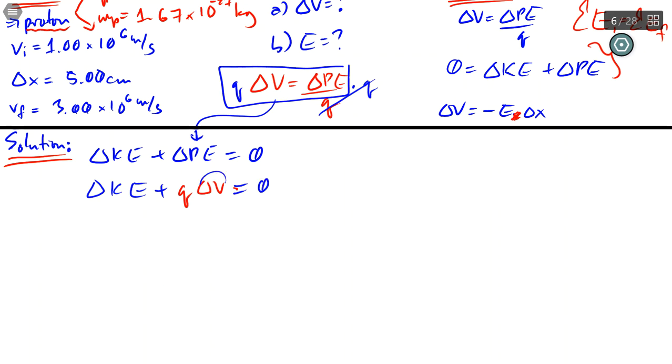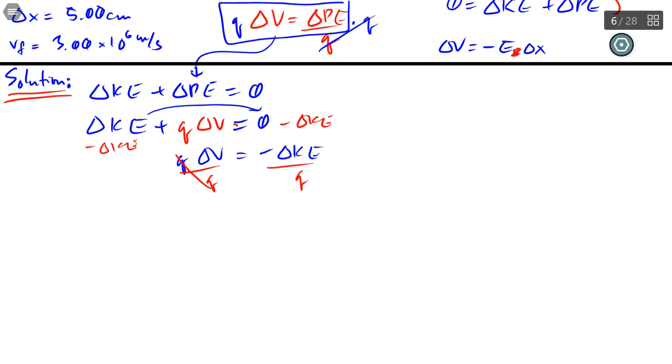Because remember, we're looking for this. So I'm going to move that kinetic energy to that side. Remember, we do that by subtracting both sides by the delta KE. Then divide both sides by Q to isolate the delta V. And there we go.